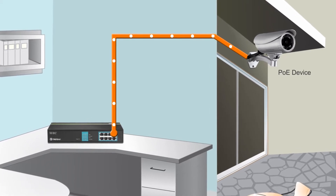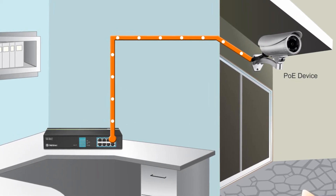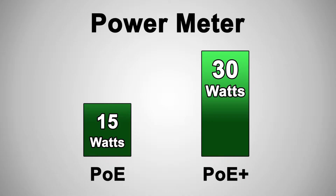Let's jump right in and look at a few different PoE scenarios. PoE comes in two varieties: Standard PoE, which provides roughly 15 watts per channel to power most typical PoE devices, and PoE Plus, which provides roughly 30 watts per channel for devices that have higher power consumption needs.